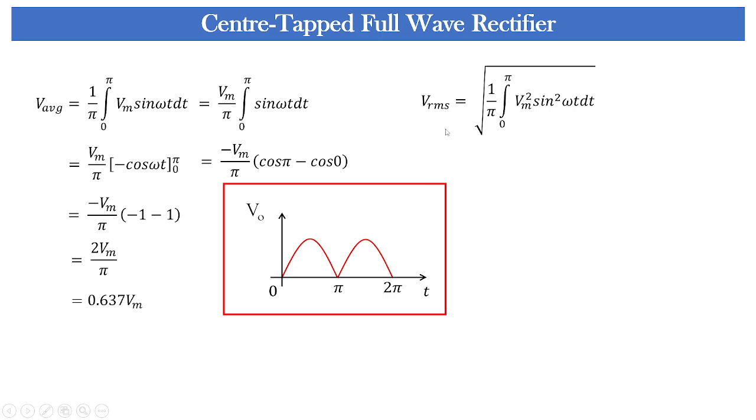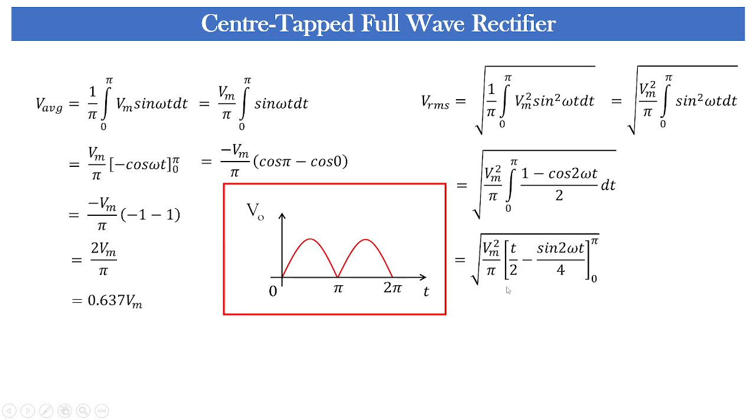Similarly, if we want to calculate the RMS value the interval goes to 0 to pi, 1 by pi integration of Vm square sin square omega t dt and the whole value is taken into under root condition and when you simplify this you are going to get Vm by root 2 which is also written as 0.707 Vm.